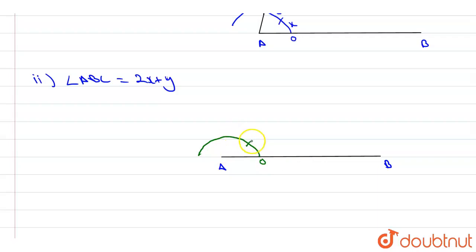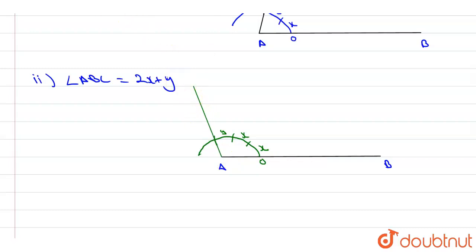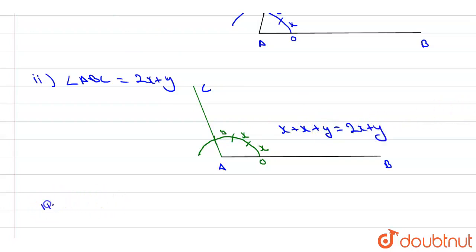From the first point of intersection, cut another arc measuring x, and from the second point of intersection cut an arc measuring y. From the final point of intersection, draw line AC. This gives angle x plus x plus y, which equals 2x plus y.